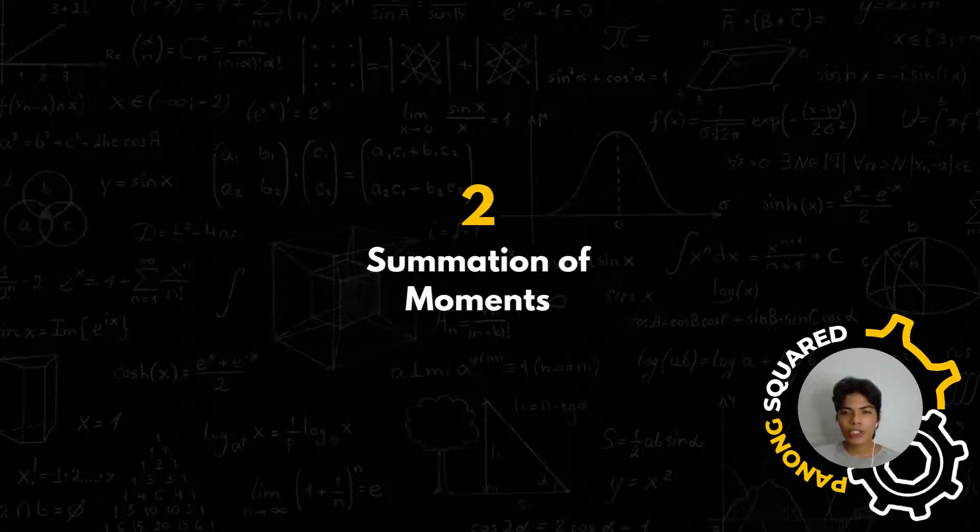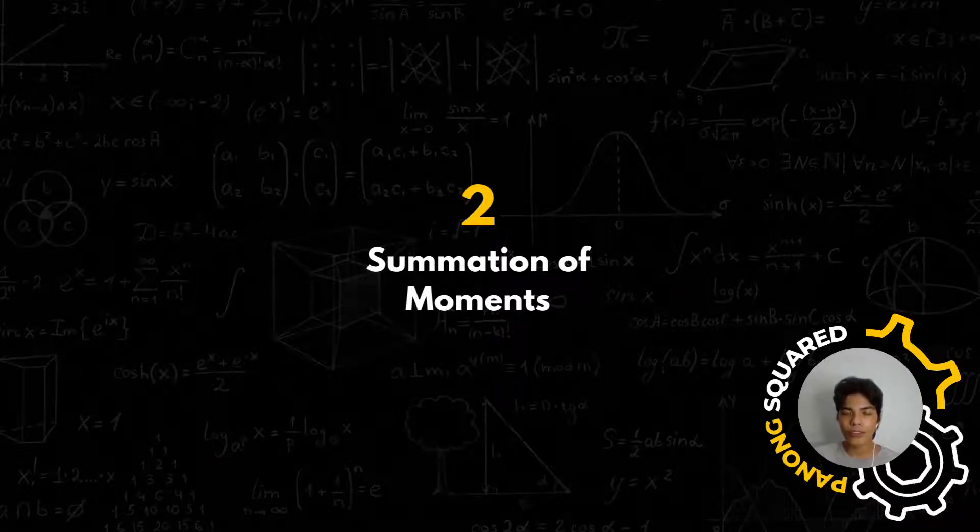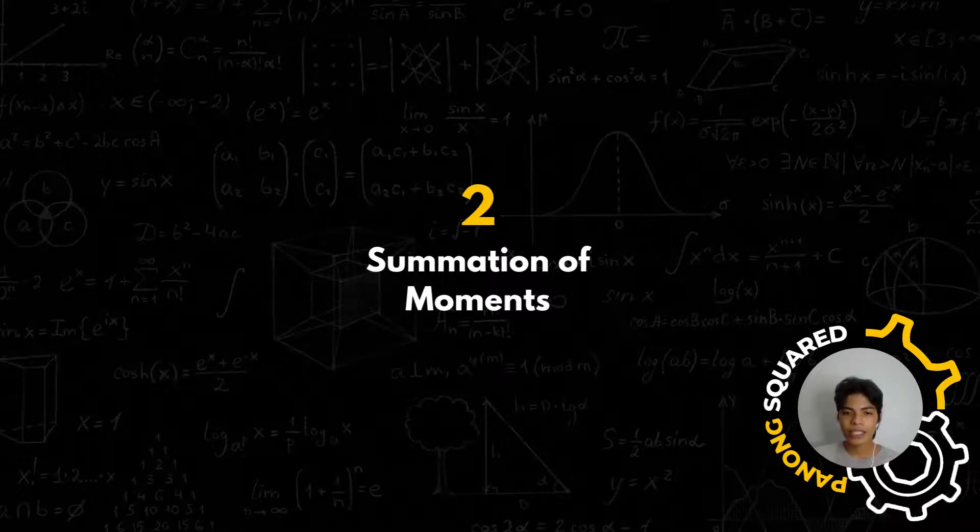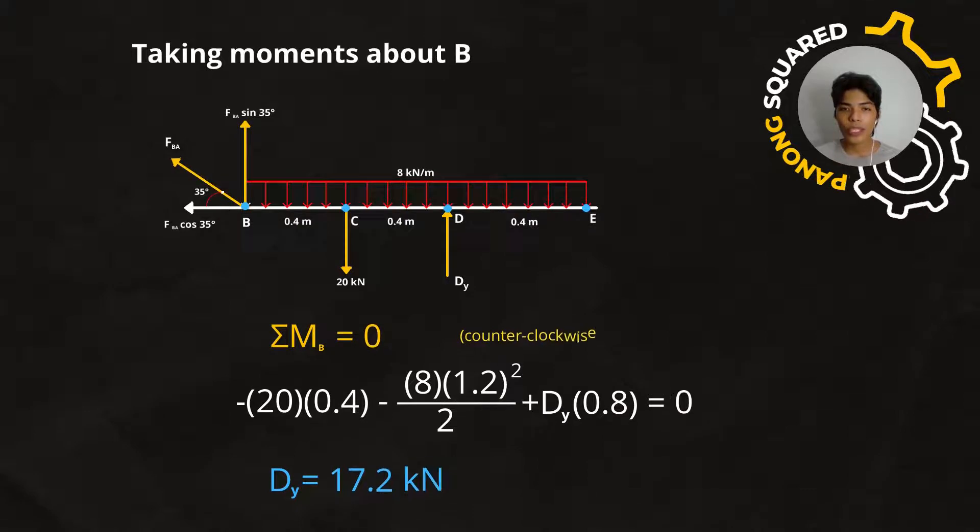The second step is the summation of moments. We are going to sum all the moments around the point of axis. In this case, it is point B. So, we are going to take moments about point B. By using the equilibrium equation, we have the summation of moments at point B is equal to 0, that is counterclockwise positive.